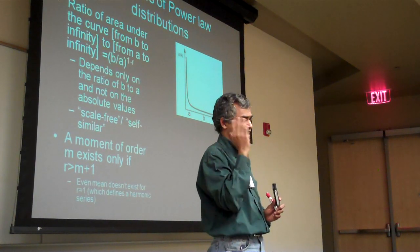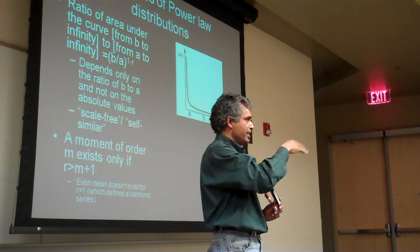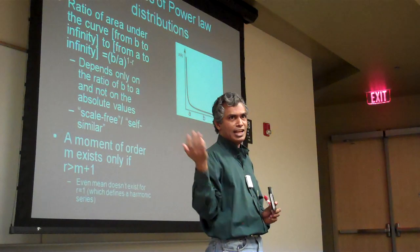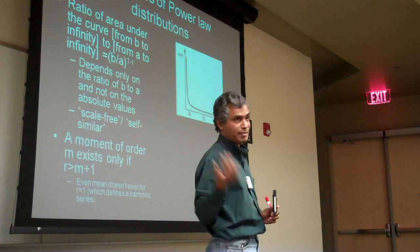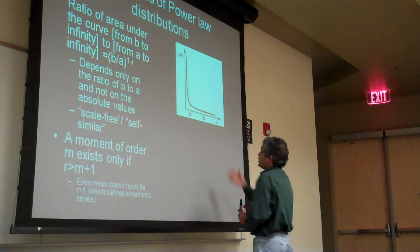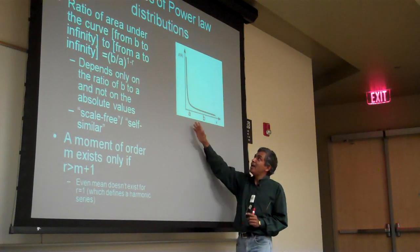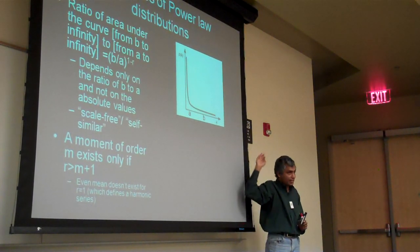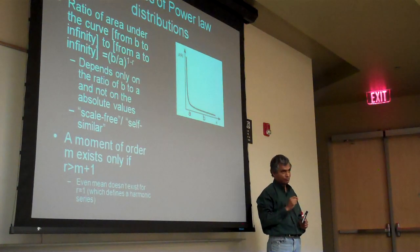Q does converge. This is like the sequence — series summations that you did in elementary calculus. If R is greater than 1, then essentially the infinite area, the area under the infinite curve, is still finite.